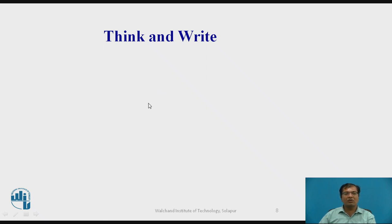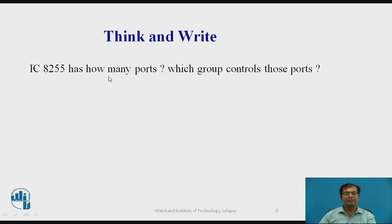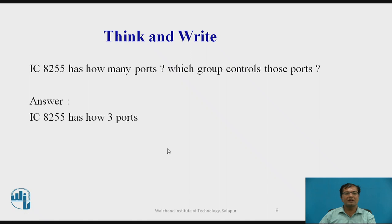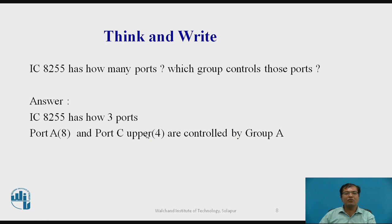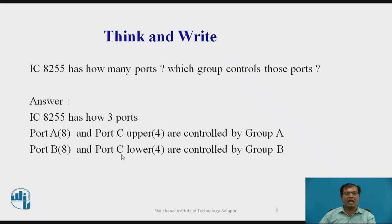Let us have a glance at a review question. IC 8255 has how many ports? Which group controls those ports? Pause the video and write down the answer. IC 8255 has 3 ports. Port A and port C upper part are controlled by group A. Port B and port C lower part are controlled by group B.